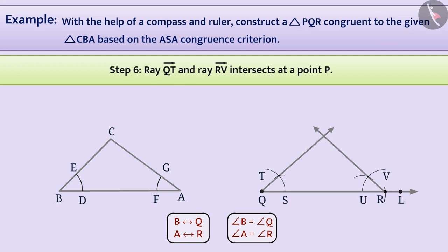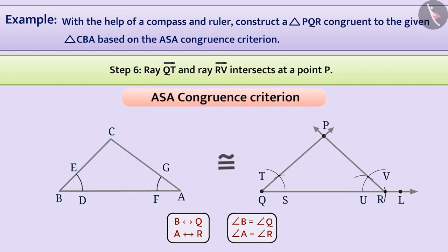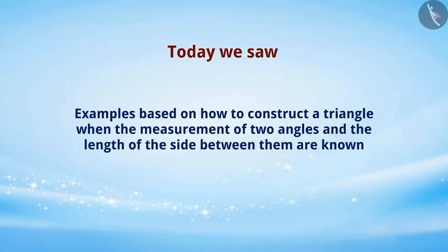Step 6: We observe that the two rays, ray QT and ray RV, intersect at a point. This point of intersection of the two rays is vertex P. Thus, we have triangle PQR which is congruent to triangle CBA under the ASA congruence criteria. Today we saw examples based on how to construct a triangle when the measurement of two angles and the length of the side included between them are known.